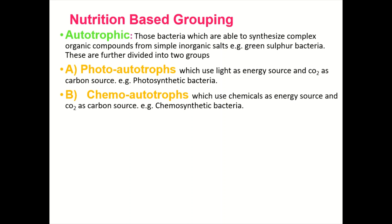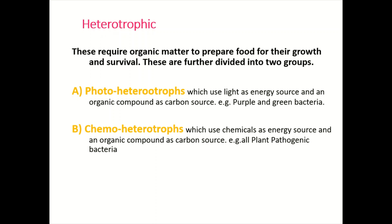Nutrition-based grouping in bacteria: bacteria could be divided into autotrophic bacteria or heterotrophic bacteria. Autotrophic bacteria can make their own food by different processes like photo-autotrophic and chemo-autotrophic. Photo-autotrophic bacteria are photosynthetic bacteria — the cyanobacteria — which use light as an energy source and carbon dioxide to make glucose. Chemo-autotrophic bacteria use chemicals as an energy source and carbon dioxide as a carbon source for making food, and require inorganic matter for growth and survival.